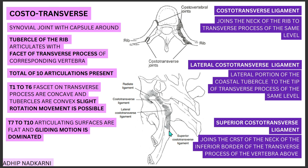The superior costotransverse ligament joins the crest of the neck of the rib to the inferior edge of the transverse process of the vertebra above it. With that we finish off the ligaments of the costotransverse joint.